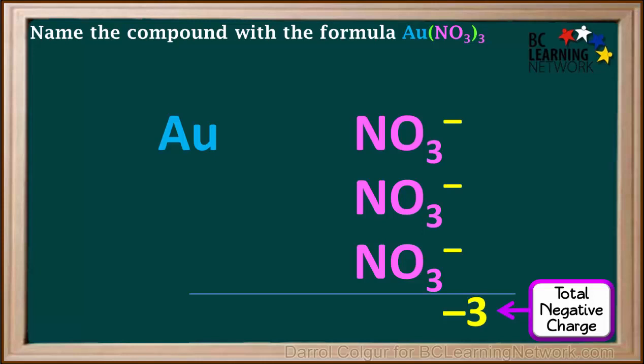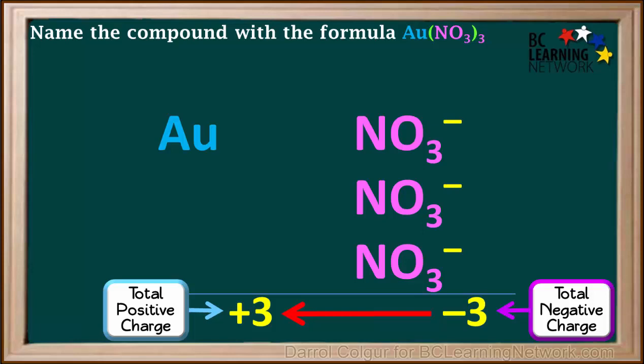The positive and negative charges must be balanced. So the total positive charge must be positive 3. There is only one gold ion, so the charge on this gold ion must be positive 3.